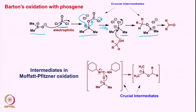If you look very carefully, whether you consider this intermediate or the second intermediate — it is very similar to the first crucial intermediate, because you have a leaving group on the sulfur connected to the oxygen, or in the other case a chlorine as a leaving group. So both crucial intermediates, whether in Moffatt-Pfitzner or Barton oxidation, are similar in nature.